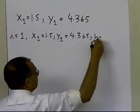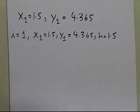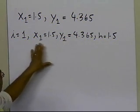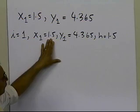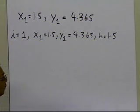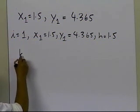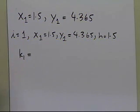Since our h is 1.5, which is our step size, if we take one more step, then the value of y, which we'll be calculating as y2, will be at x2, which will be 1.5 plus 1.5, giving us 3 — and that's what we're looking for. So let's go ahead and calculate our k1, k2, k3, and k4 values, and then calculate what y2 will be.